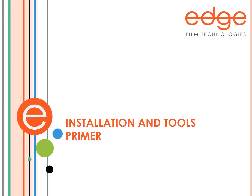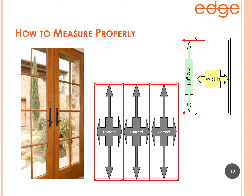Now some guidelines on installation and tools. If you're going to be an installer, this is not sufficient — this is a general understanding for non-installers. When measuring windows, you don't measure the rough opening across multiple panes; you measure each pane separately. As shown in the upper right picture, you measure the height from edge to edge not counting the frame, and the width from edge to edge not counting the frame.